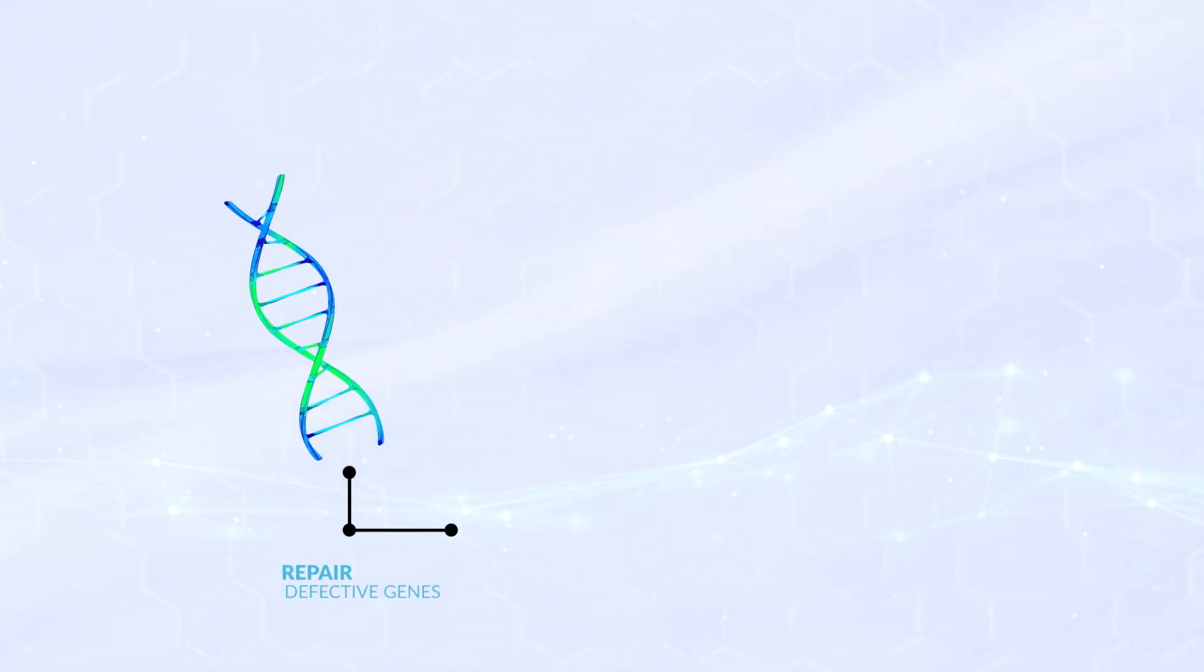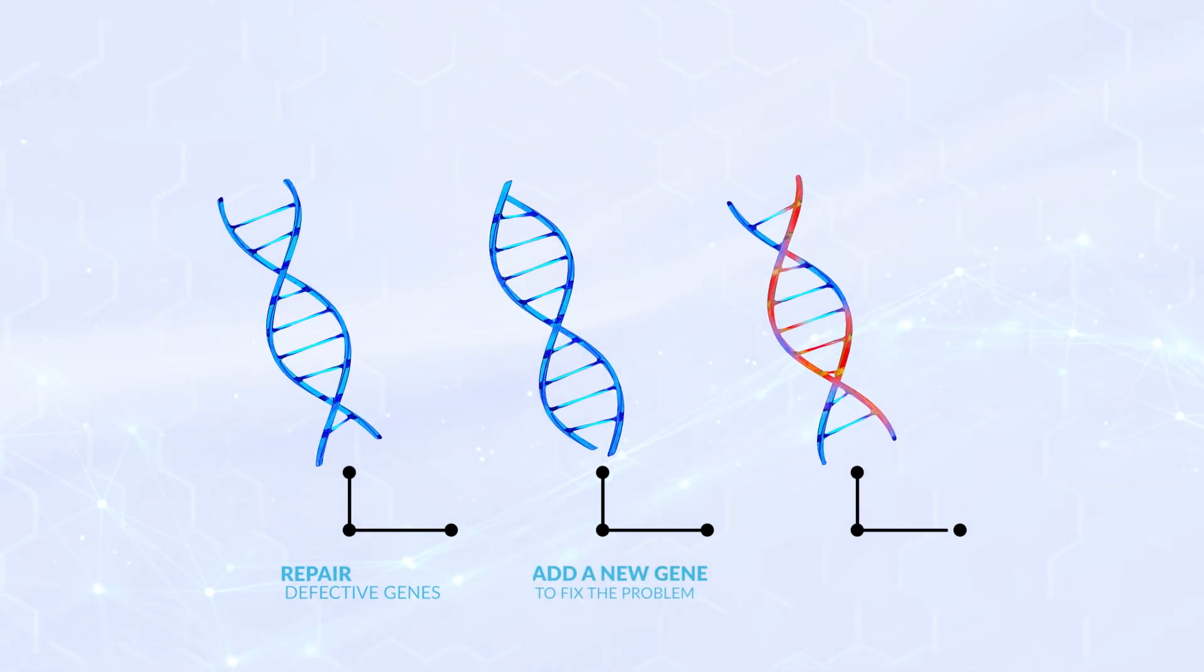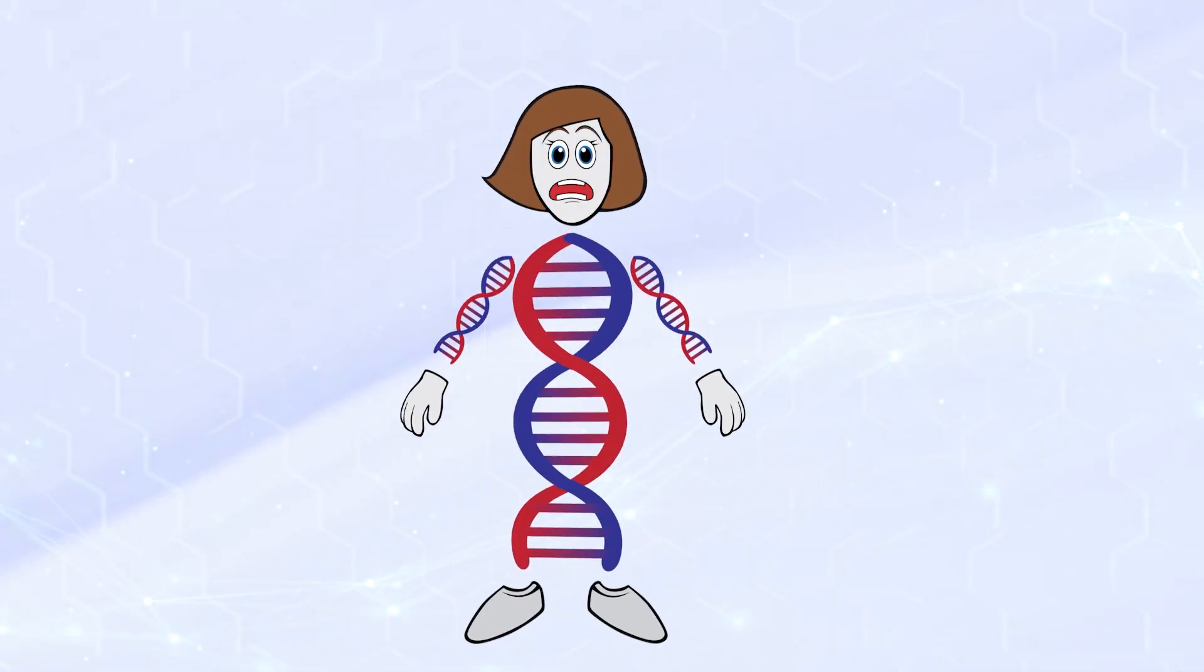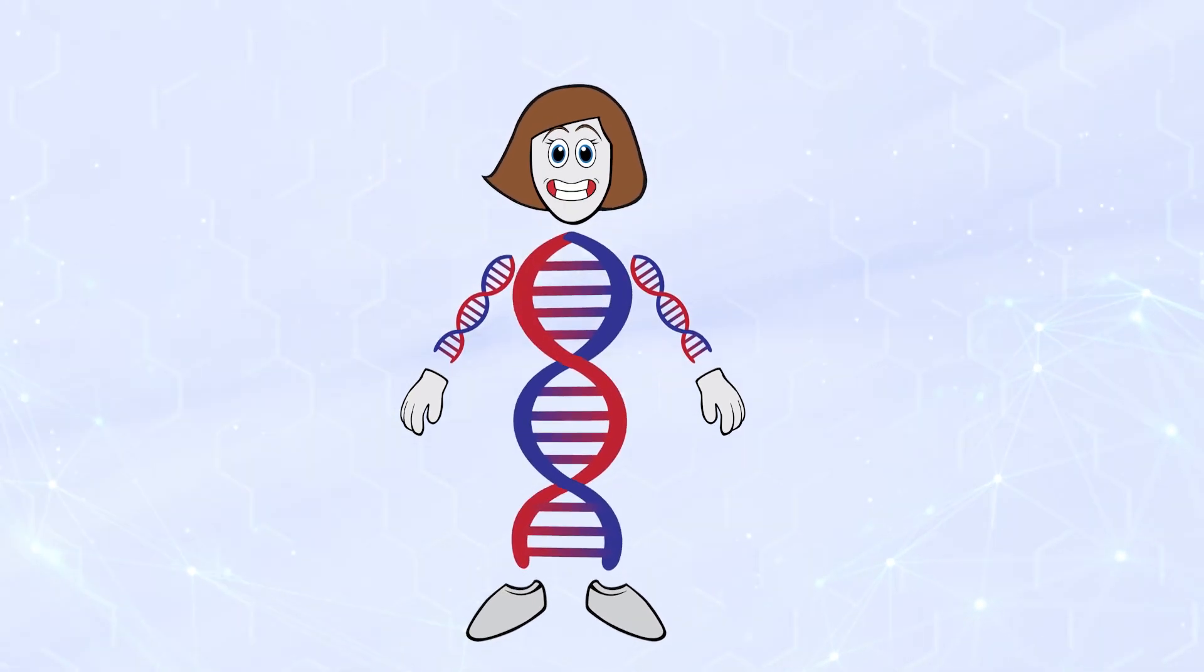In gene therapy, scientists can repair a defective gene, add a new gene to fix the problem, or even turn off a problem gene. For PKU, scientists are working on introducing a brand new PAH gene.